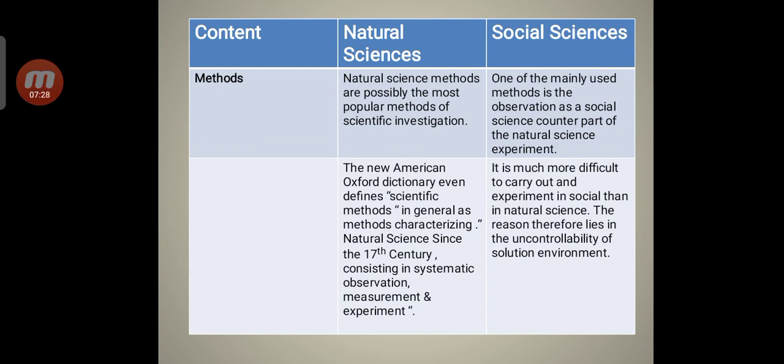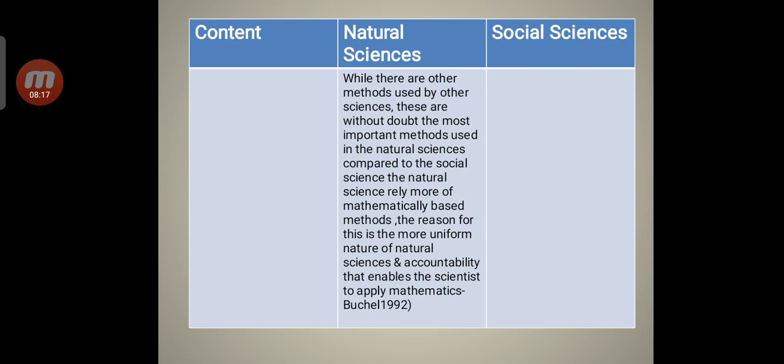Now the methods. Natural sciences methods are possibly the most popular methods of scientific investigation. The New American Oxford Dictionary even defines scientific methods in general as methods characterizing natural science since the 17th century consisting in systematic observation, measurement and experiment. Social science: observation is one of the mainly used methods as a social science counterpart of the natural science experiment. It is much more difficult to carry out an experiment in social than in natural science. The reason lies in the uncontrollability of social environment. While there are other methods used, these are without doubt the most important methods. The natural science rely more on mathematically based methods. The reason for this is the more uniform nature of natural sciences and accountability that enables the scientist to apply mathematics by Buchel in 1992.